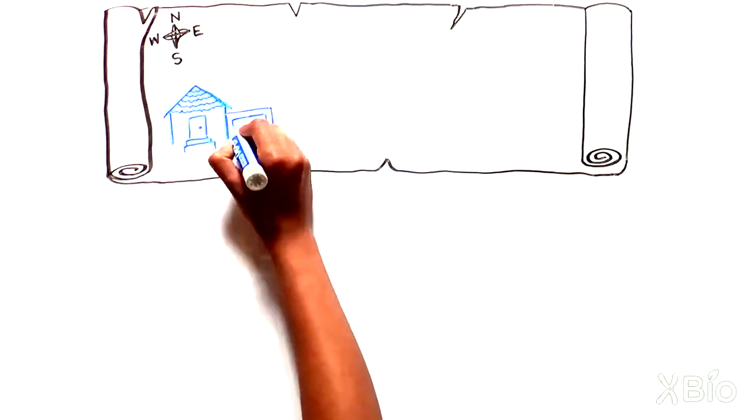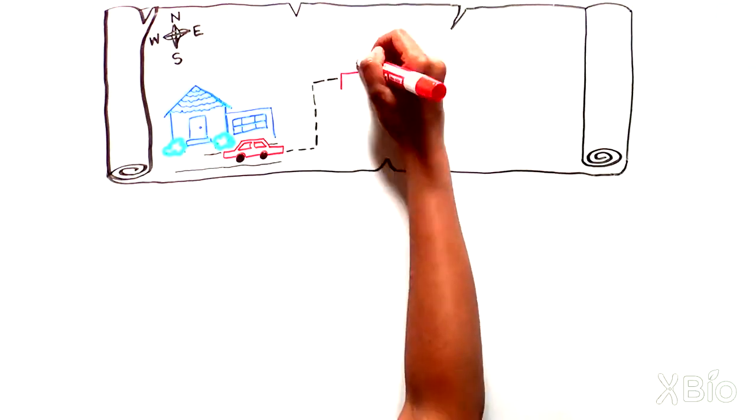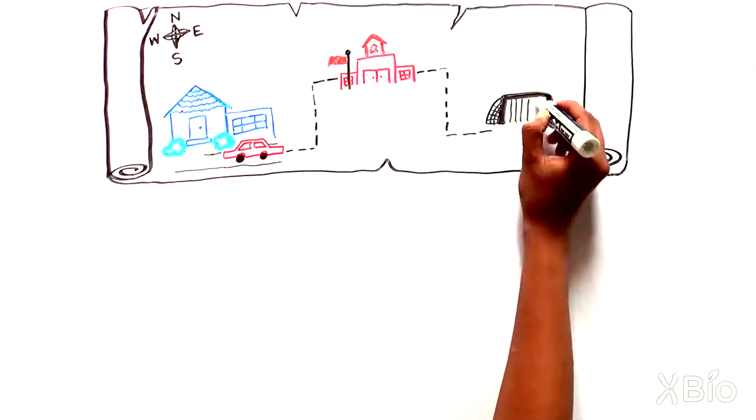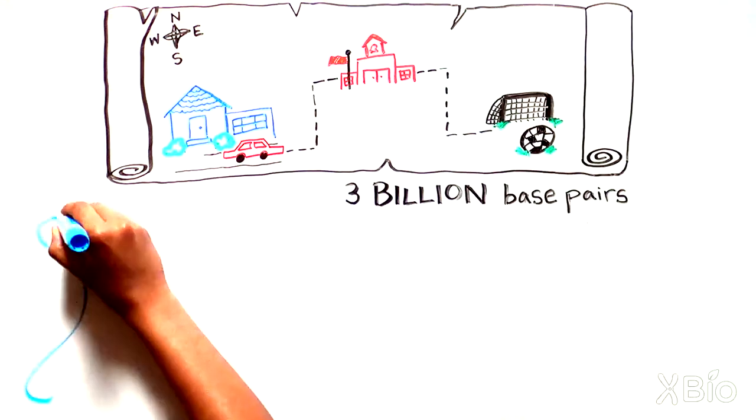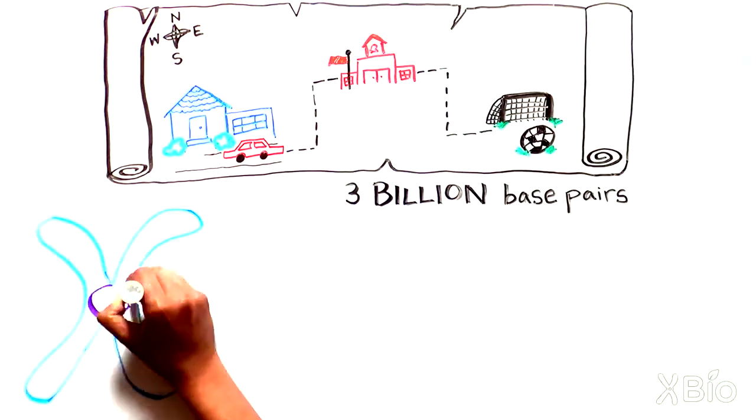We use maps every day to figure out how to walk from home to school, and then from school to soccer practice. Scientists also use maps to navigate through the enormous amount of DNA in a cell, 3 billion base pairs in humans. The DNA is organized into several long strands called chromosomes.